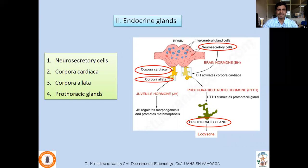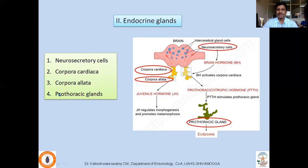In addition to exocrine glands, there are a number of endocrine glands which are very important for normal growth and development of insects. A few of these endocrine glands are neurosecretory cells, corpora cardiaca, corpora allata, and prothoracic glands. These four are very important for growth and development and perform critical functions during the molting process.